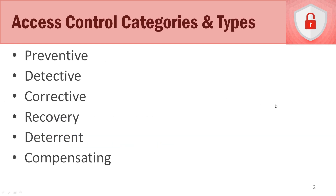We're going to be talking about several different specific categories and types of access control. These are very important for you to understand, because everything that we do with controlling access to our people, our processes, and our technology relates back to this. We have preventative, detective, corrective, recovery, deterrent, and compensating access controls. Let's talk about each one in detail.